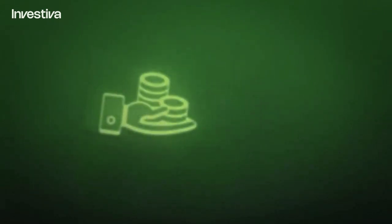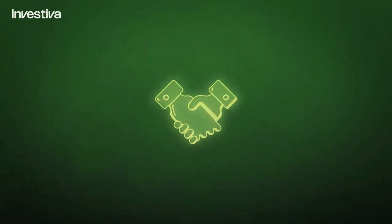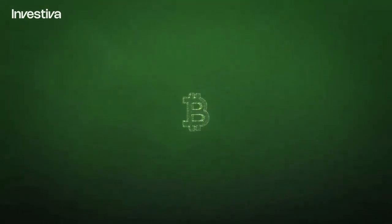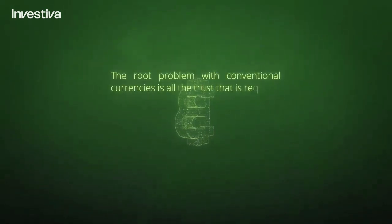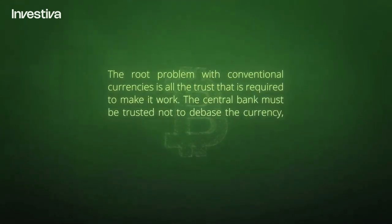Nonetheless, fiat currencies are accepted as legal tender and the promise of the issuer. In other words, people blindly trust the competence and foresight of central banks. On that, the inventor of Bitcoin, Satoshi Nakamoto, said: 'The root problem with conventional currencies is all the trust that is required to make it work. The central bank must be trusted not to debase the currency.'